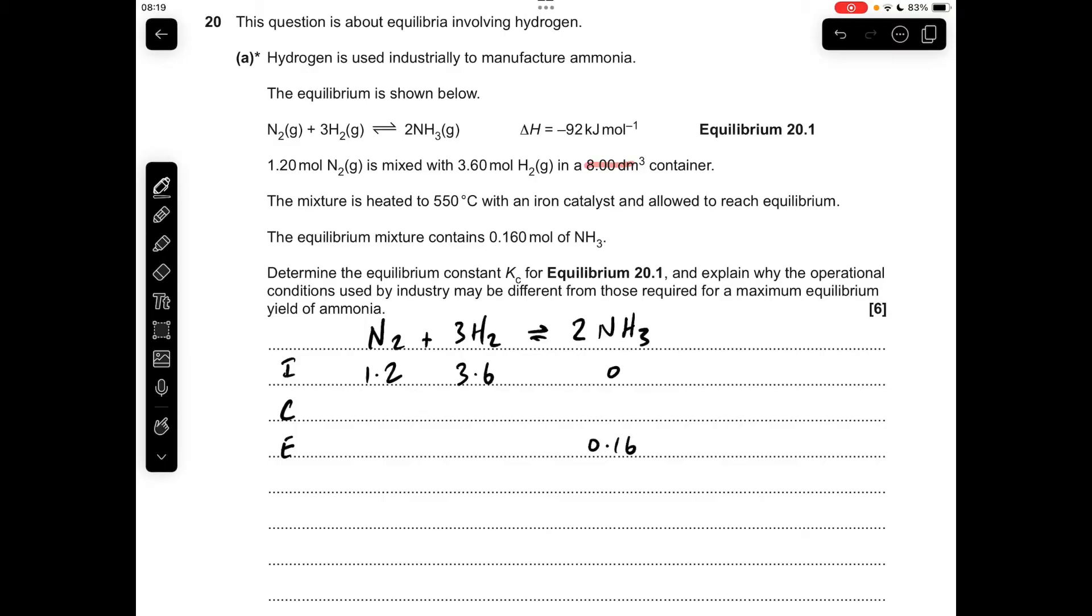The ammonia has increased from zero to 0.16, so it's increased by 0.16 moles. If we look at the ratio, half as many moles of nitrogen is going to react. This is going to drop by 0.08, which means that at equilibrium there'll be 1.12 moles left.